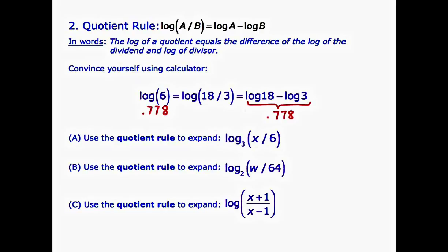Let's try a few examples. Part A: use the quotient rule to expand the log of x over 6, base 3. We're taking the log of a quotient, so we can express this as the difference of two logs: the log of x base 3 minus the log of 6 base 3.